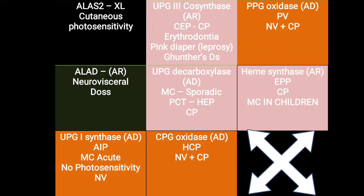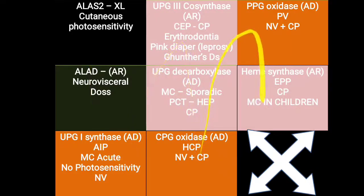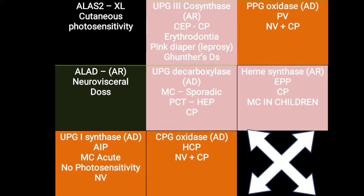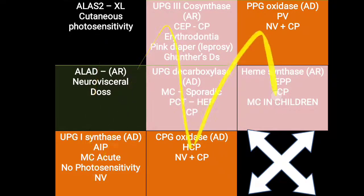That covers erythropoietic porphyria as well as a summary of the most important porphyrias. If you remember the sequence of these eight enzymes, it will be easy to remember all the types of porphyria.